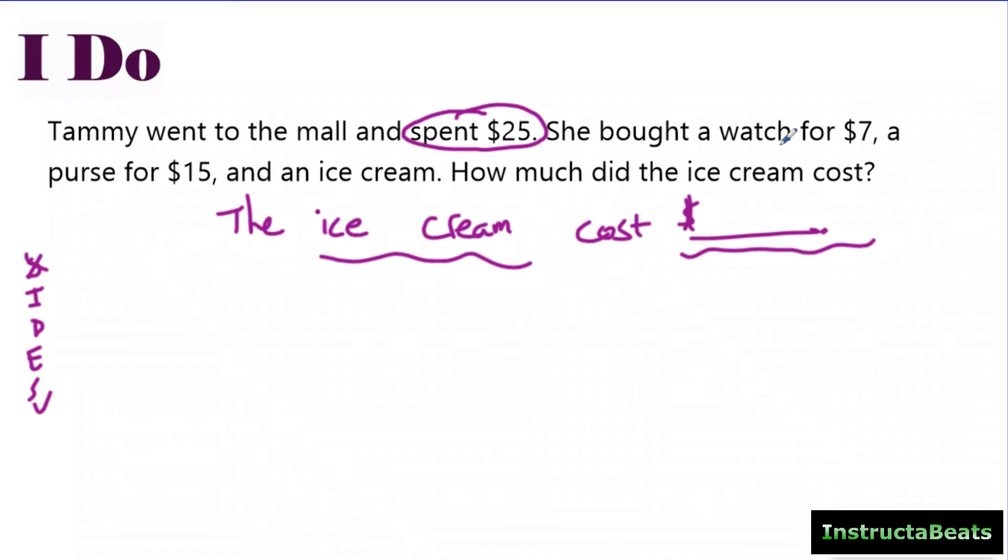We've got to start taking students away from just circling numbers and not knowing why, to understanding why they're circling the important information. She bought a watch for $7, circling it because it's about money. And she bought a purse for $15 and she bought an ice cream. How much did the ice cream cost?